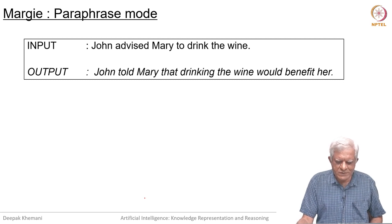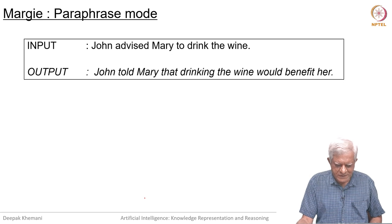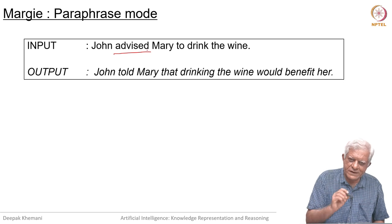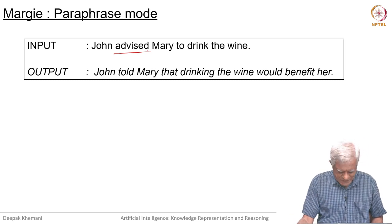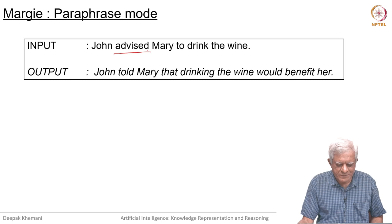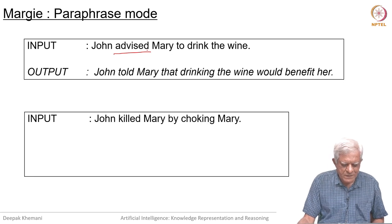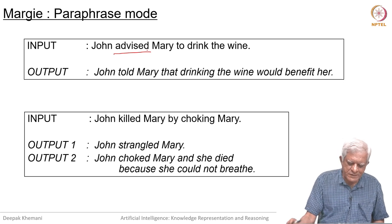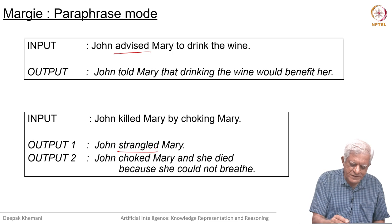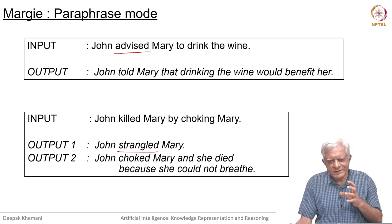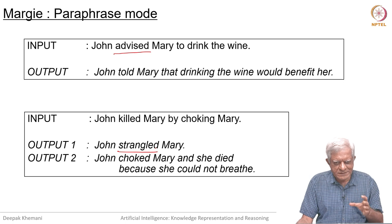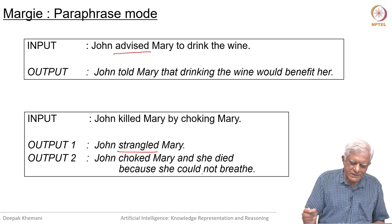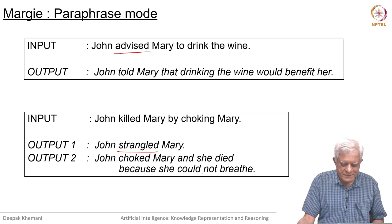John advised Mary to drink the wine. Inferred: John told Mary that drinking the wine would benefit her. That comes from, as we will see later, the meaning of the word 'advice' — how is advice represented in conceptual dependency? John killed Mary by choking Mary. Maybe that is the meaning of 'strangled' in the dictionary in which conceptual dependency structures are stored, and there is some detail you can infer if you know what choking or strangling means.